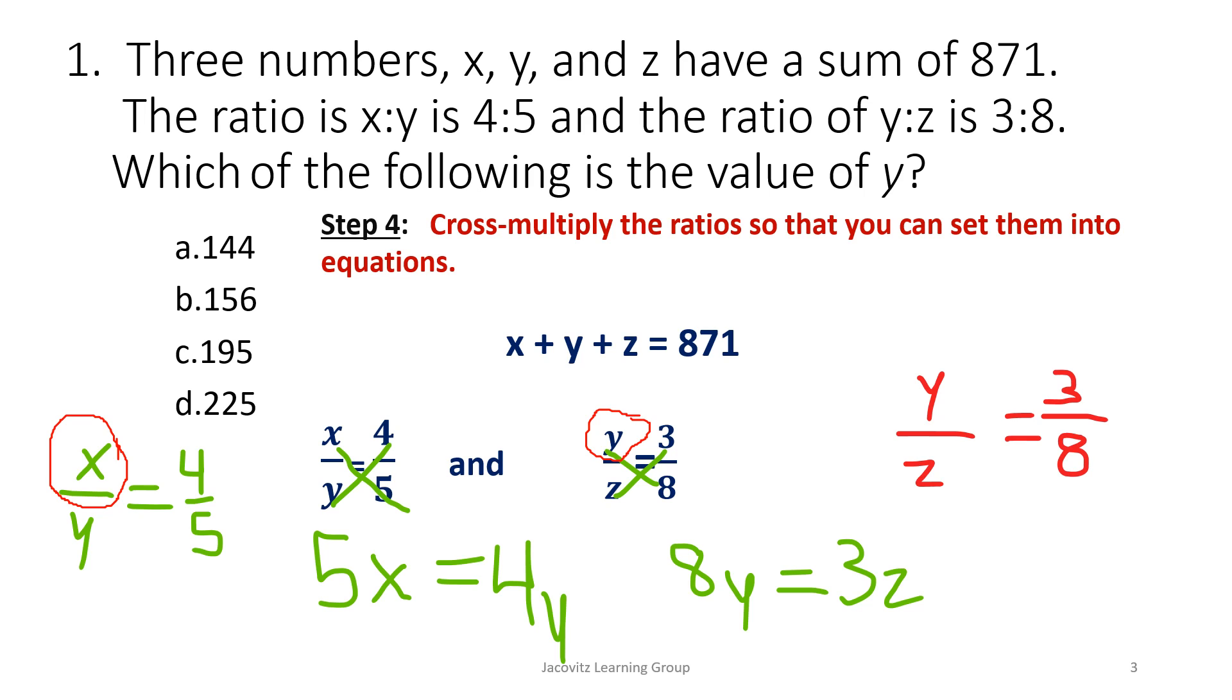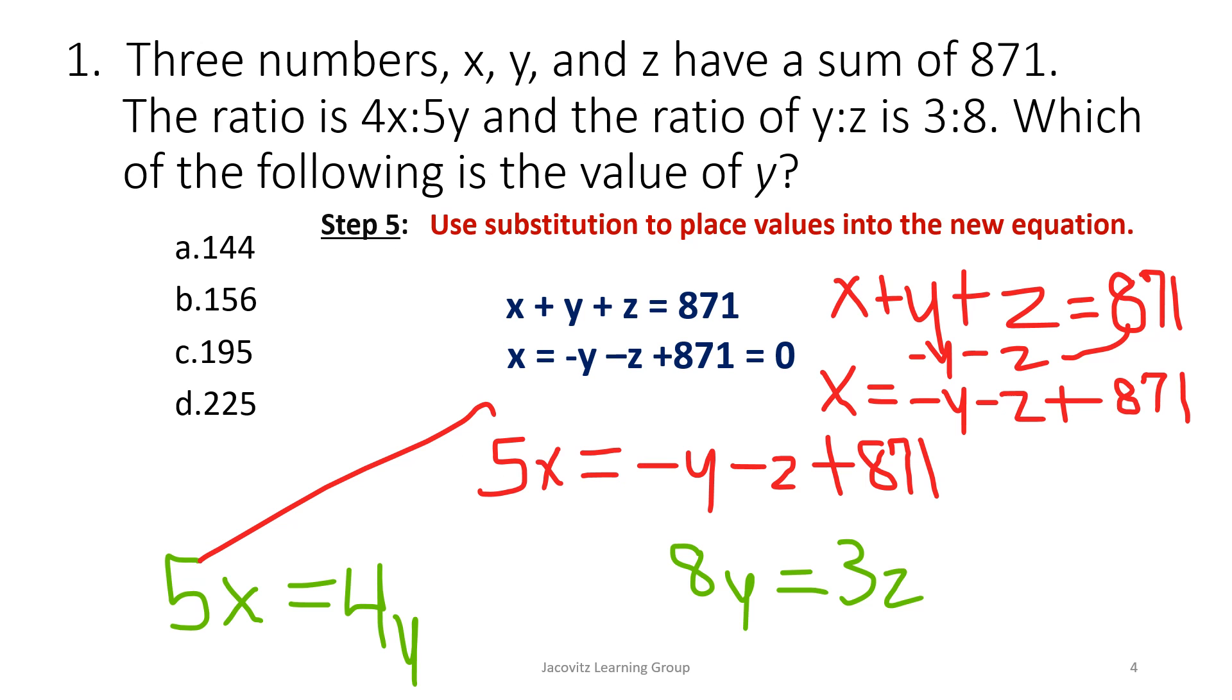And then you cross multiply. So when you cross multiply, 5x, 4y, and they equal each other because you have an equal sign, and same thing here, 8y equals 3z. Okay, now you have an equation set up.